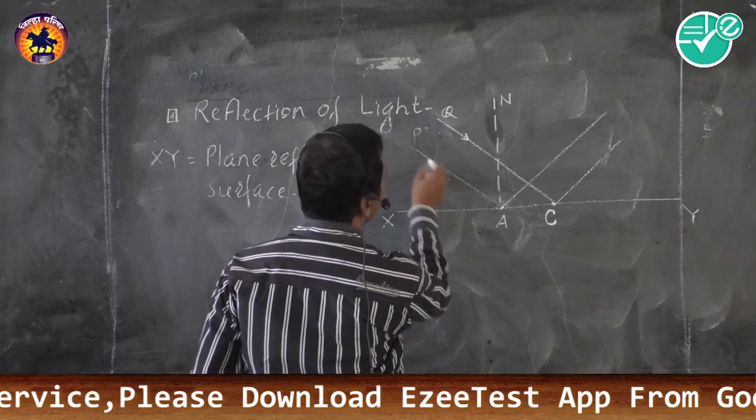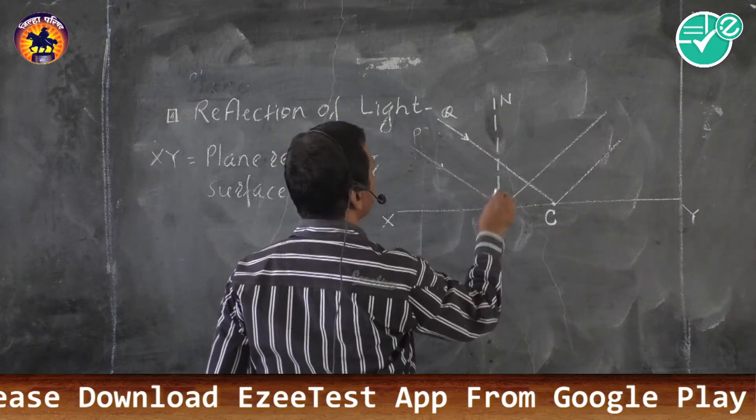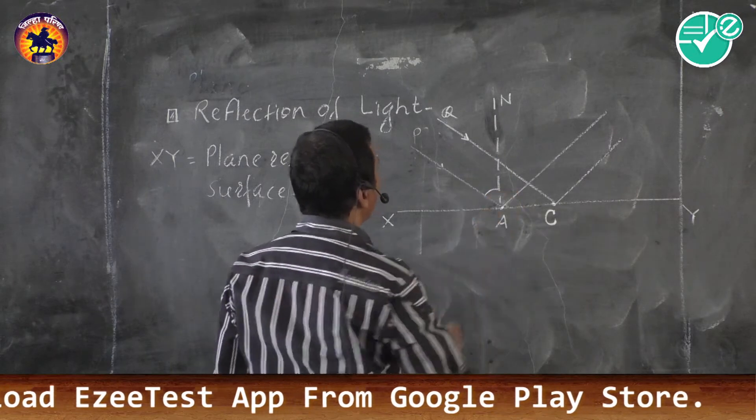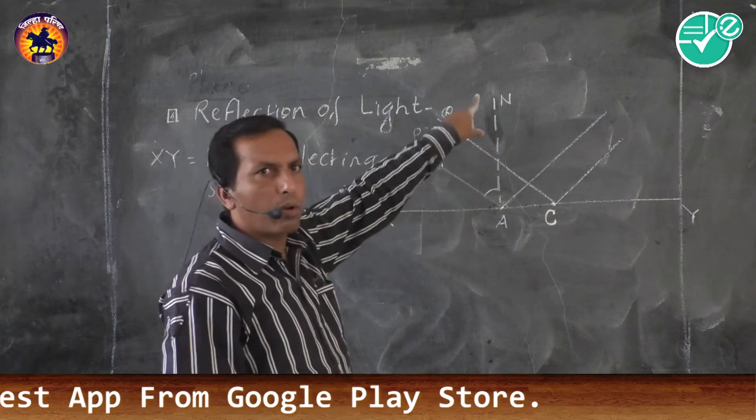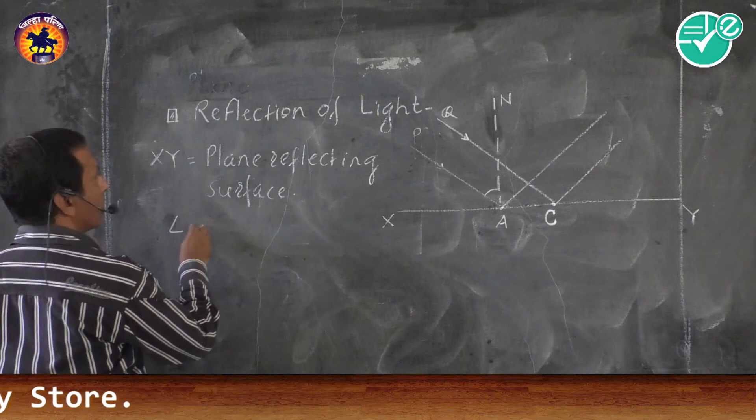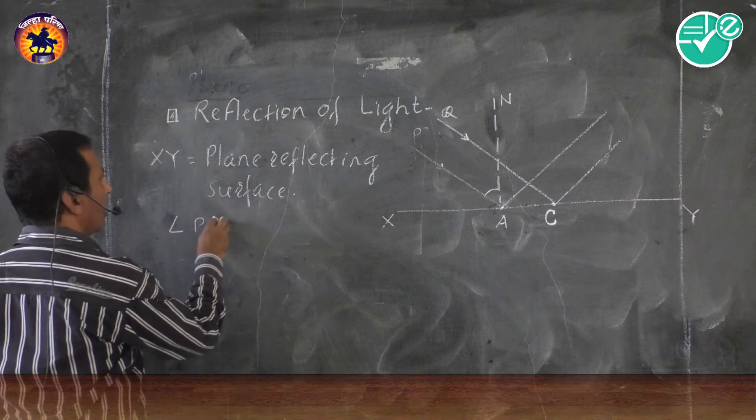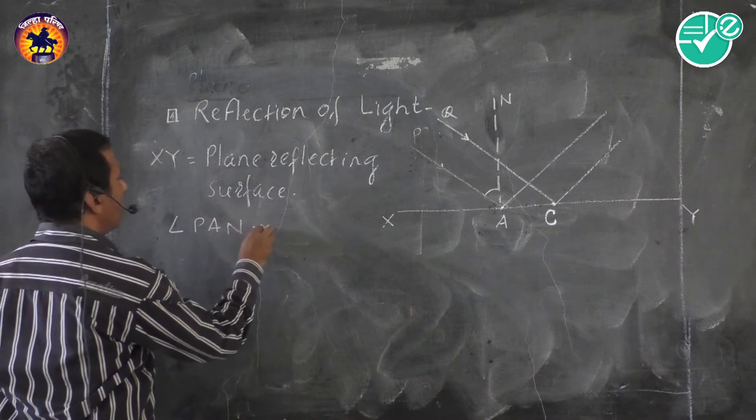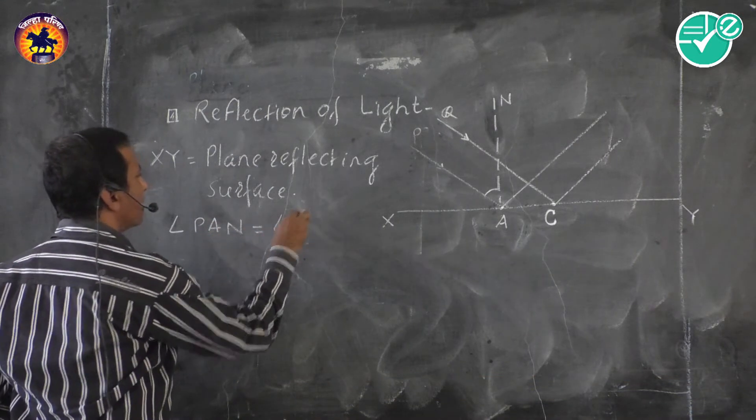That is angle PAN. It is the angle between incident ray and normal, angle PAN. That is angle of incidence.